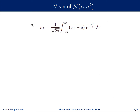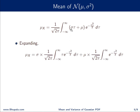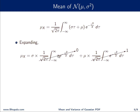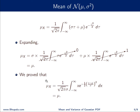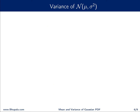Expanding the integral gives: σ × ∫_{−∞}^{∞} τ · e^(−τ²/2) dτ + μ × ∫_{−∞}^{∞} e^(−τ²/2) dτ. Since τ · e^(−τ²/2) is an odd function, its integral over (−∞, ∞) is 0. The second integral is the area under the standard normal distribution, which equals √(2π), so the result is μ × 1 = μ. Hence the mean of the Gaussian random variable is μ.